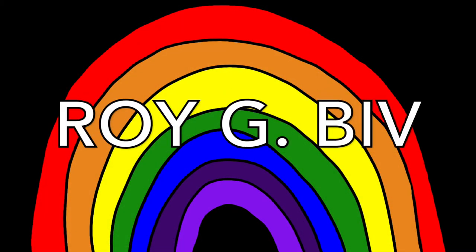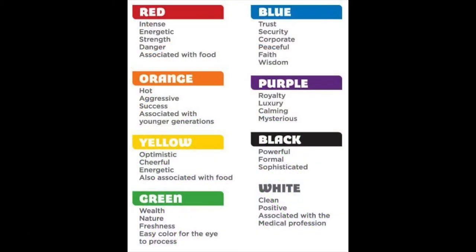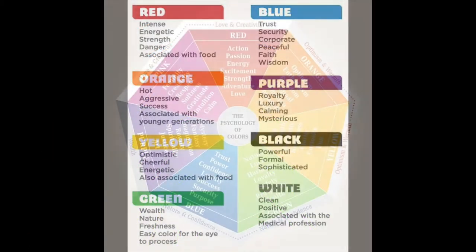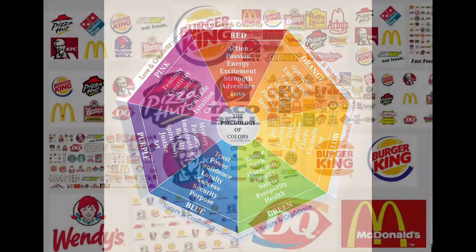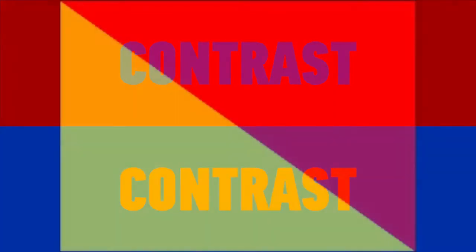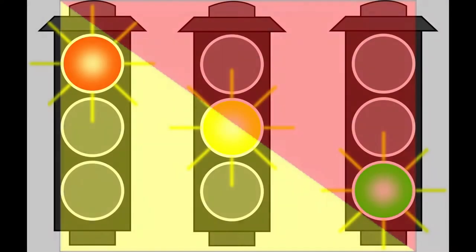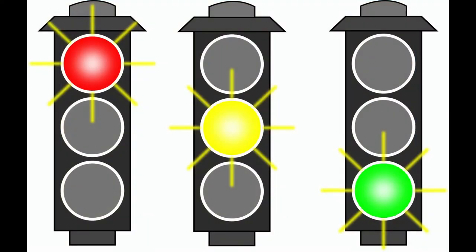We're going to look at our friend Roy G. Biv — that's the order of the rainbow. Each letter represents a color; R is for red, and so on. Color plays a vitally important role in the world in which we live. Color can sway our thinking, change our actions, cause a reaction. It can be irritating or soothing to the eye, raise your blood pressure, or even suppress your appetite. As a powerful form of communication, color is irreplaceable.